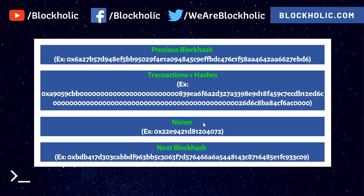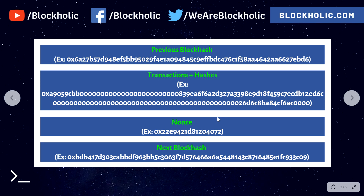What the miner does is perform some kind of mathematical calculation that satisfies a certain condition. We're going to talk about that in later videos. The miner uses the nonce as a random number to satisfy that condition.